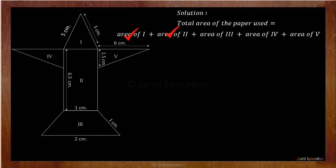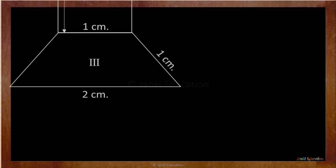Now we will find the area of the third figure. You can see this third figure is a trapezium. The area of a trapezium is height multiplied by the sum of its parallel sides, that is (a + b), divided by 2. To do this calculation, you need to be a little attentive. So this is our third figure. Area of 3 is equal to the area of trapezium.